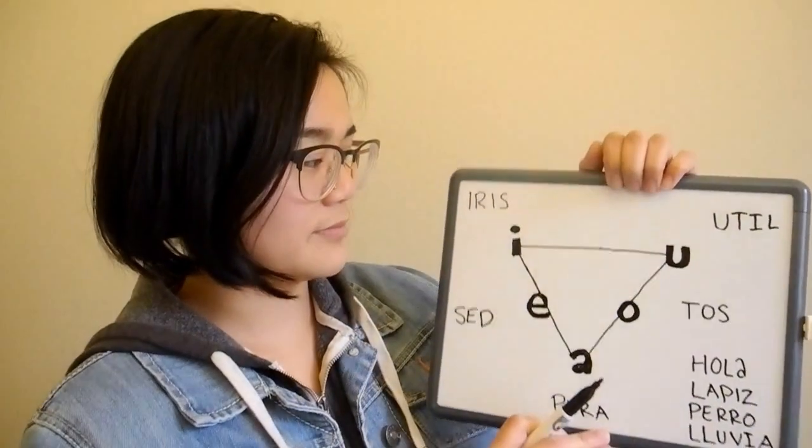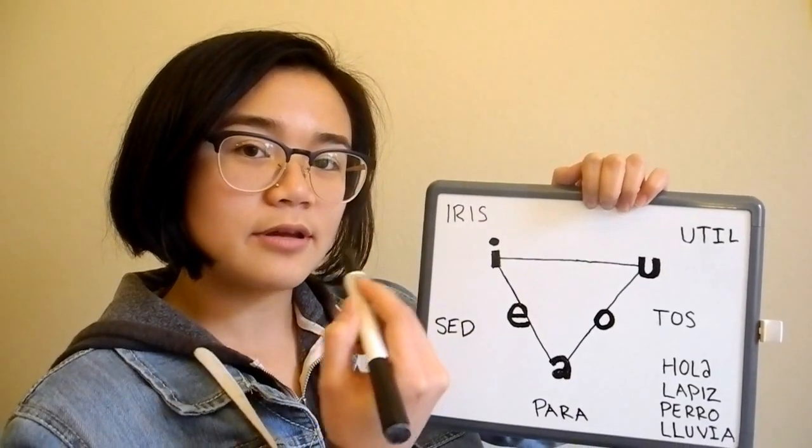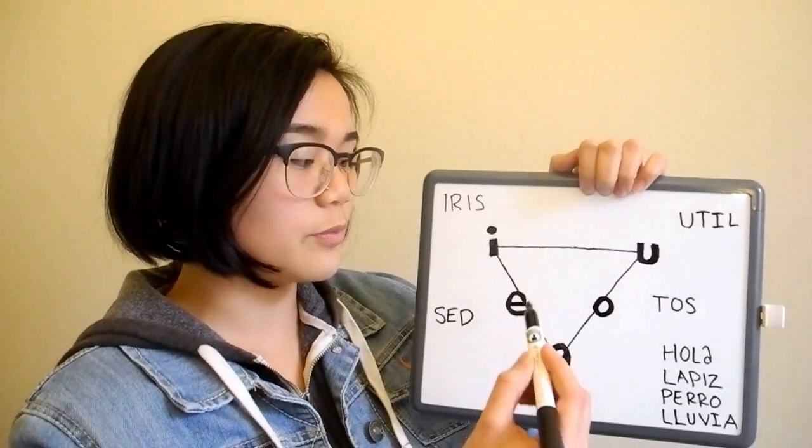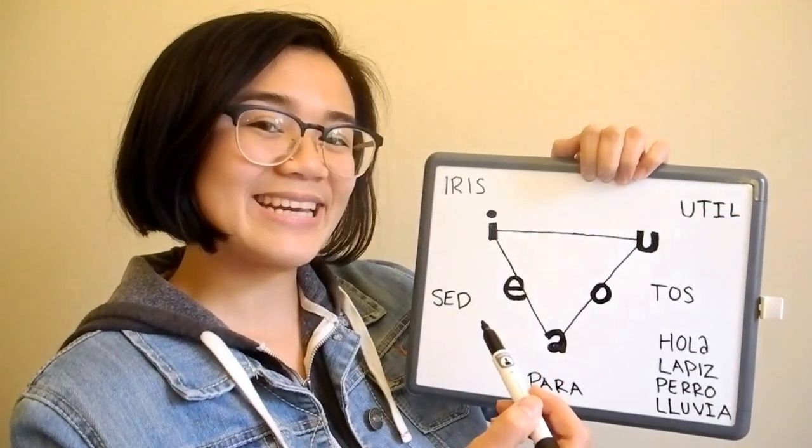So let's run through some examples. Iris. You notice that my mouth, my lips, are very stretched. When you pronounce I and E, your mouth is in the most stretched position. Iris.